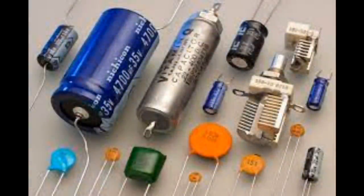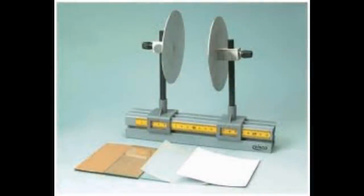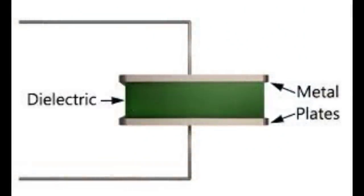A capacitor in its simplest form is a parallel plate capacitor. That literally is two metal plates with something in between them that we put a charge on.